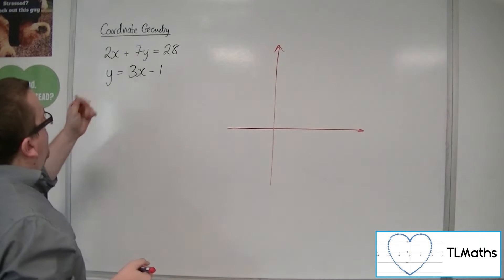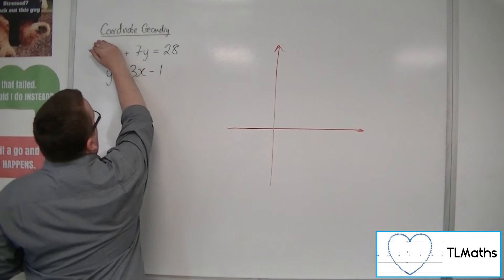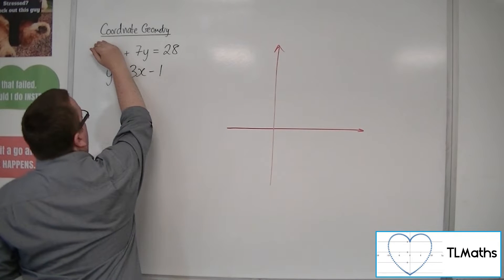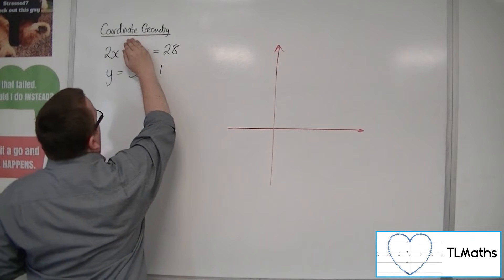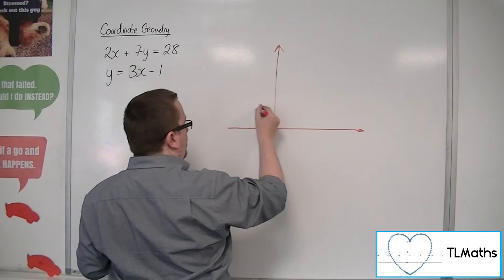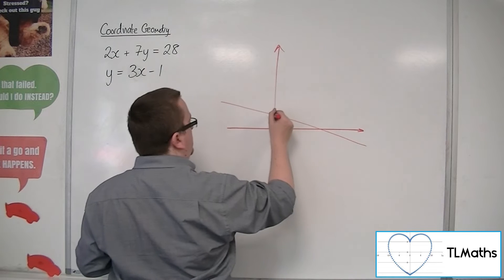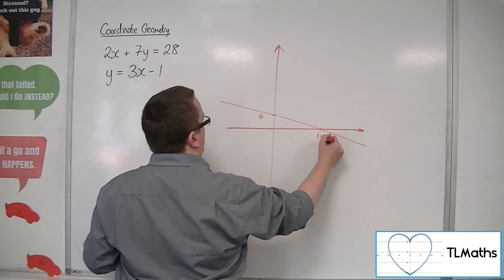So 2x plus 7y equals 28. When x is 0, we're going to get 7y equals 28, so y equals 4. And when y is 0, 2x equals 28, so x equals 14. So 4 on the y-axis, 14 on the x-axis, so quite a shallow gradient, 4 and 14.